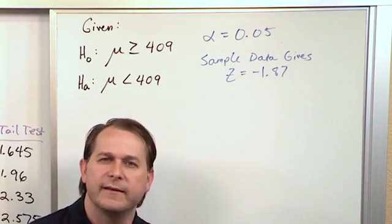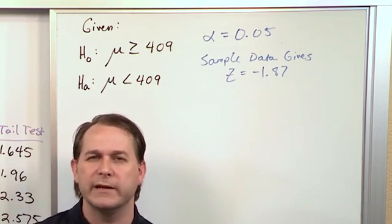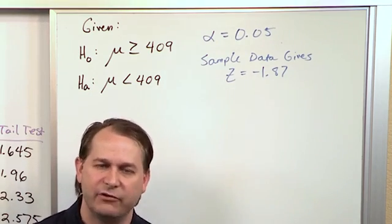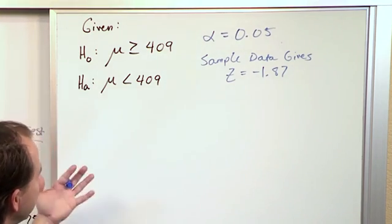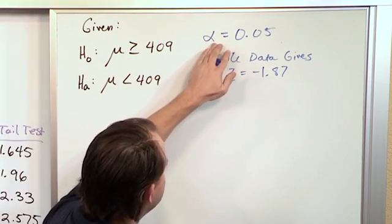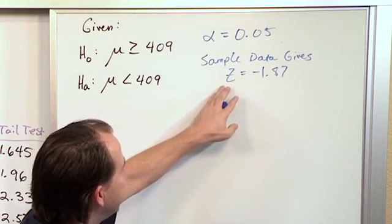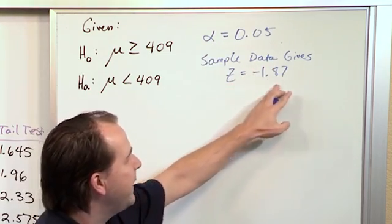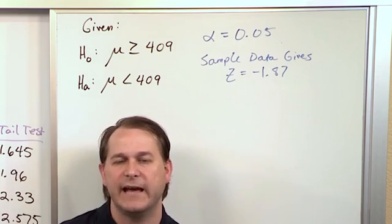You might look at this and say, well, this looks a little bit different than the kind of problems we've been doing before. But really, it's not any different. It gives you exactly the same information, just slightly different. We have both hypotheses here. We know the level of significance. And in this case, it's telling us the sample data gives us a value of z. This is basically calculating the test statistic ahead of time.